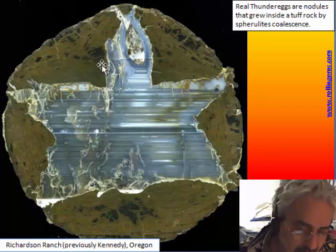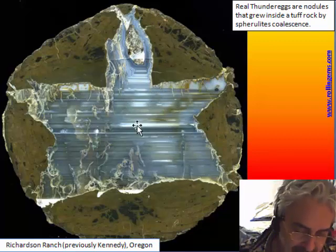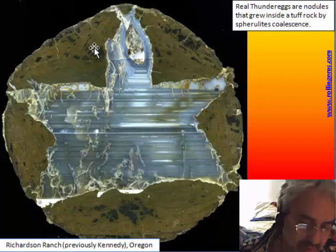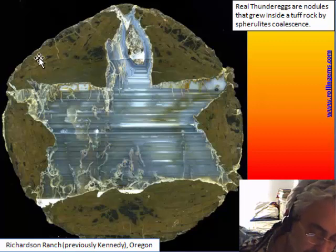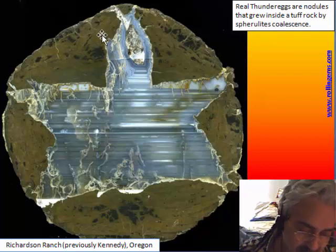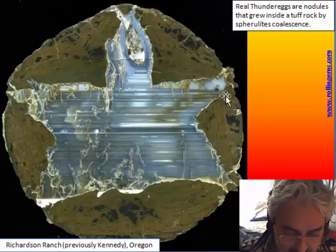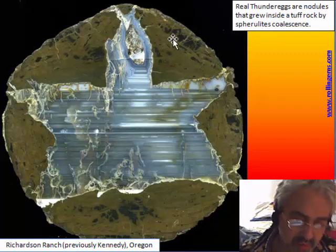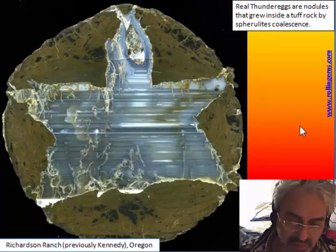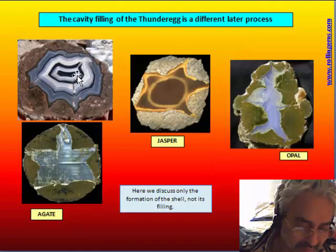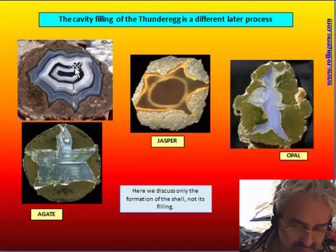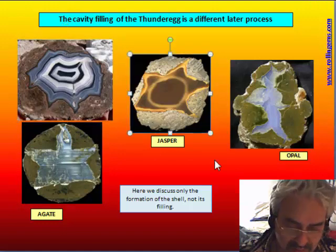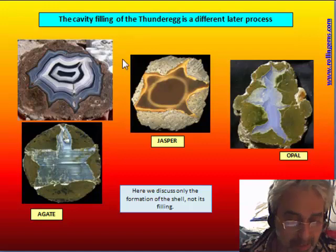This is a typical thunder egg where we can see the fracture filling — in this case a nugget — and this is the real nodule with jasper material. It consists of many, many spherulites that are stuck together. We can see on the surface the shape of every spherulite, though not in every deposit is this internal structure so clearly visible. The fracture can be filled with agate, banded and horizontal-layered, with jasper or with opal. We can also find thunder eggs with empty fractures.